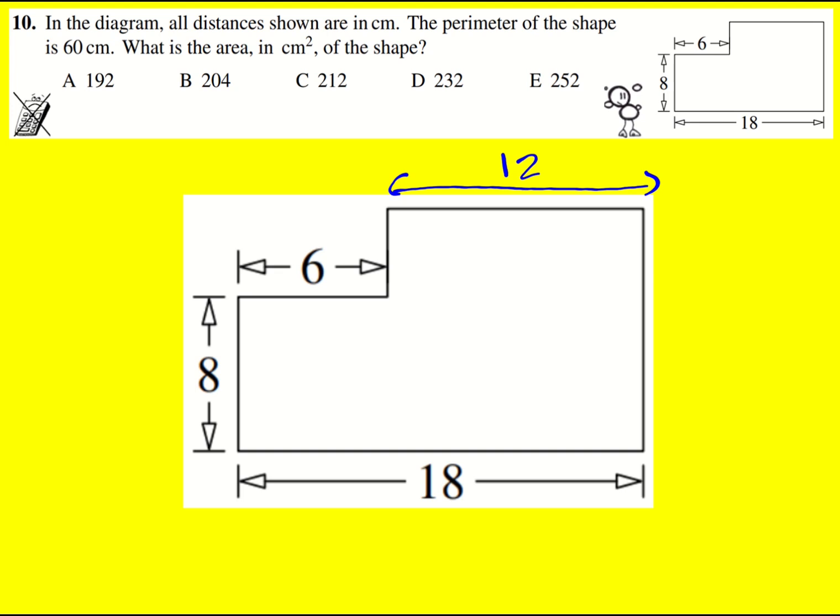So how do we want to find the area? Well it's going to be the area of the whole thing and then we could subtract this little square here. So I want to find this missing length, actually, don't I?